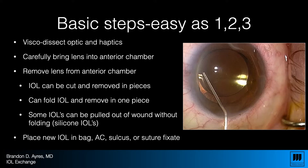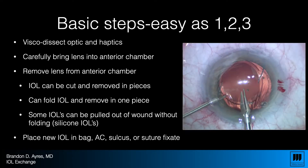Basic steps are pretty straightforward. We're going to visco-dissect the optic and the haptics of the IOL, carefully bring the implant into the anterior chamber with plenty of OVD, and remove the lens. I like to cut the implant into multiple pieces, but you can also refold them, or some implants you can simply pull out of the wound — they're very rubbery and stretchy and will squeeze through a small wound. Then you place your new IOL either in the capsular bag, anterior chamber, sulcus, or suture-fixated depending on the situation.